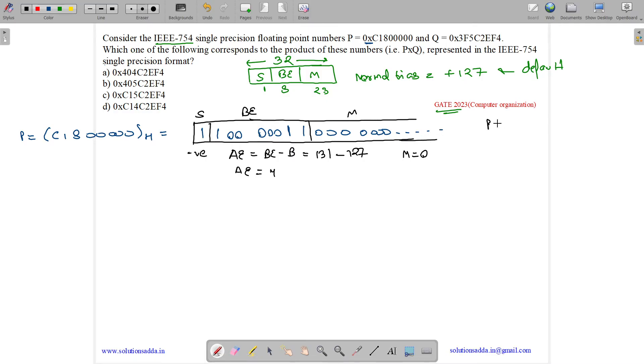So what is our number? The number P = -1.0 × 2^4.